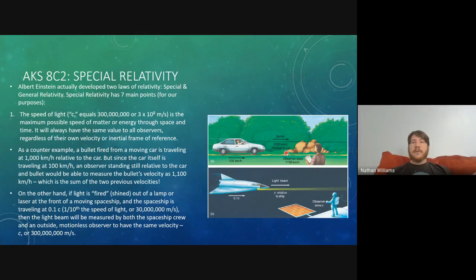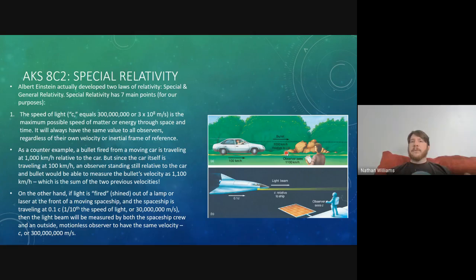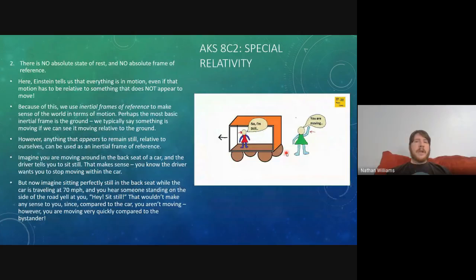So the speed of light is constant for all observers and is the maximum velocity for anything moving through space and time. One apparent exception: space itself can actually expand faster than the speed of light. But when we say nothing moves faster than light, we mean things moving through space — not the movement of space itself. That's a weird idea we'll come back to when we discuss cosmology and the Big Bang.